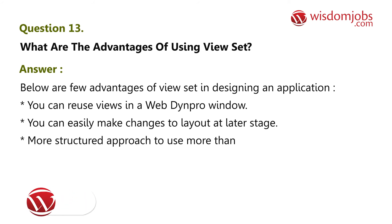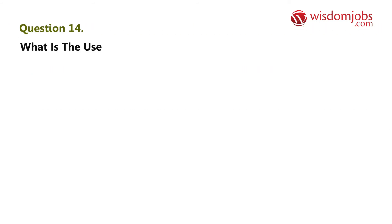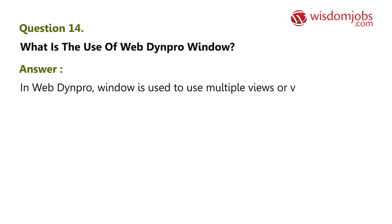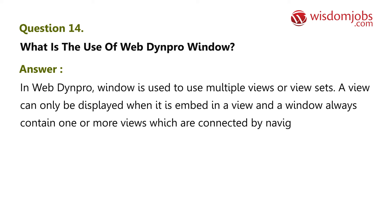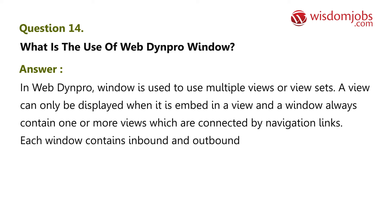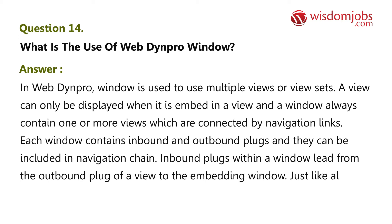Question 14: What is the use of a WebDynpro window? Answer: A WebDynpro window is used to use multiple views or view sets. A view can only be displayed when it is embedded in a window, and a window always contains one or more views which are connected by navigation links. Each window contains inbound and outbound plugs and they can be included in a navigation chain. Inbound plugs within a window lead from the outbound plug of a view to the embedding window, and just like all other inbound plugs, they represent an event and call the event handler assigned to them.